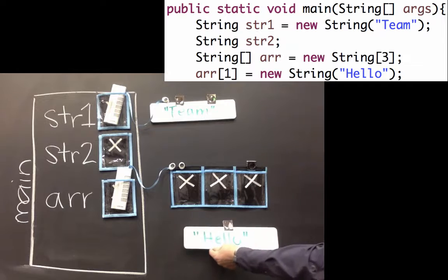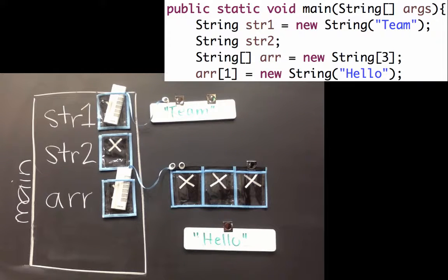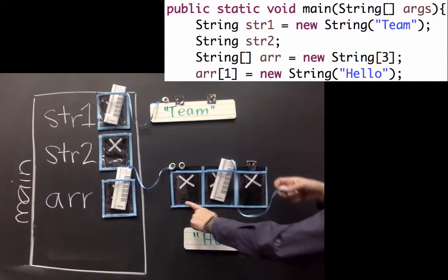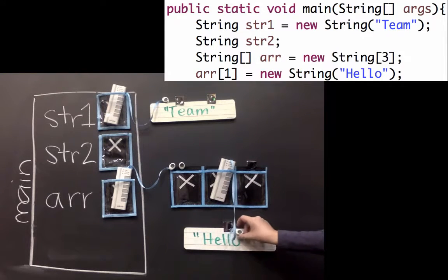So I'll make a new string called hello. That's the right hand side. And then on the left hand side, I'll say array at index 1, so it's 0, 1, 2, is going to reference that hello.